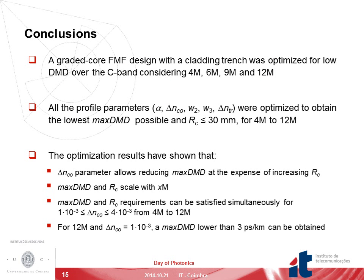In conclusion, a graded-core few-mode fiber design with a cladding trench has been optimized for lower DMD over the C-band, covering from 4 to 12 modes. All profile parameters are optimized to obtain the lowest max DMD possible and a curvature radius lower than 30 millimeters. The optimization results show that the ΔNCO parameter allows us to reduce max DMD at the expense of increasing RC. Even so, max DMD and RC requirements can be satisfied simultaneously for a ΔNCO value between 1 and 4×10⁻³, from 4 to 12 modes. Moreover, for 12 modes, a max DMD lower than 3 picoseconds per kilometer can be obtained.